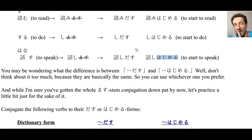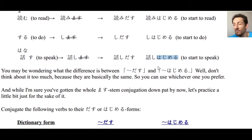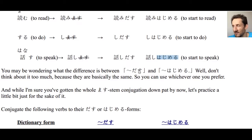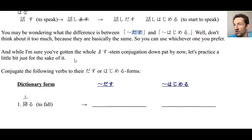You may be wondering what the difference is between using dasu and hajimeru. I recommend not thinking about it too much. After asking some of my Japanese friends, I've concluded they're essentially the same — just like in English you can say 'the boy started to cry' or 'the boy began crying.' My personal feeling is that dasu might suggest something slightly surprising or unexpected, but for the most part they're exactly the same. Just use whichever one you like.